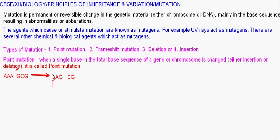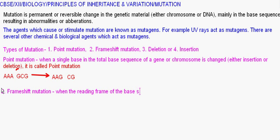Now coming to frame shift mutation — that's the next type. Frame shift mutation is when the reading frame of the base sequence changes. This topic is covered in chapter 6, so this lesson includes content from both chapter 5 and chapter 6. The same example can be given, or you can use another example, like the phrase 'Ram is fat.'